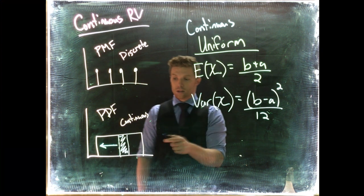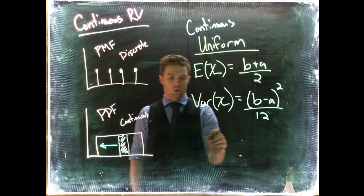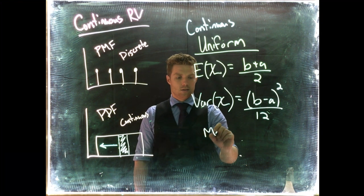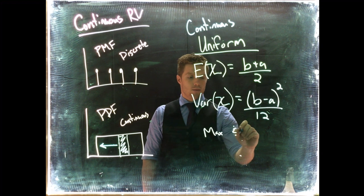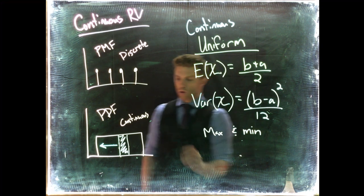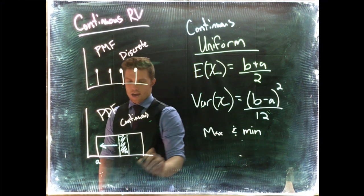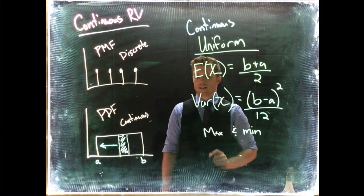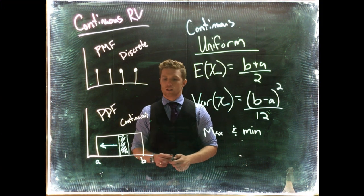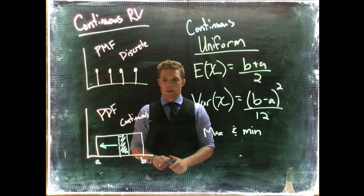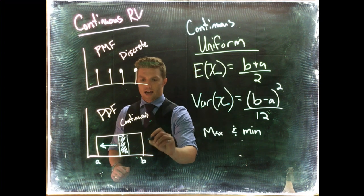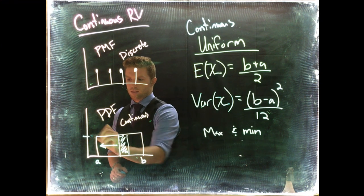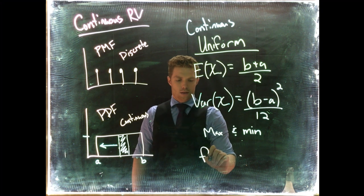We only need two pieces of information to fully define everything. To fully define this, we need to know the max and the min, or what's normally called A and B. If we can get those, we have a fully defined uniform distribution. And if we want to know